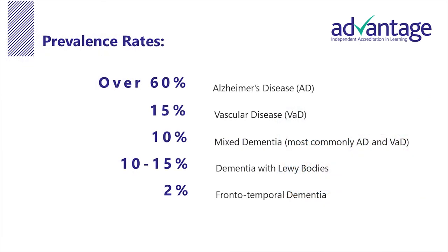You might be interested in the prevalence rates of dementia. Alzheimer's disease accounts for over 60 percent of cases. Vascular disease, 15 percent. Mixed dementia, which is most commonly Alzheimer's disease and vascular disease, 10 percent. Dementia with Lewy bodies, 10 to 15 percent. And frontotemporal dementia, 2 percent.